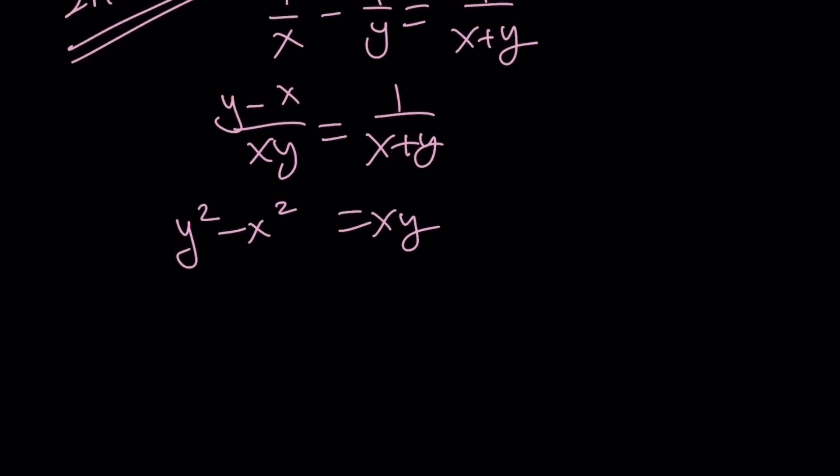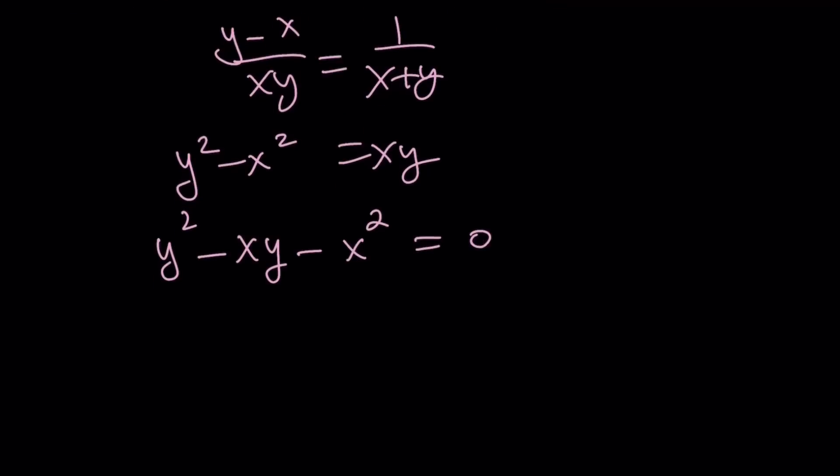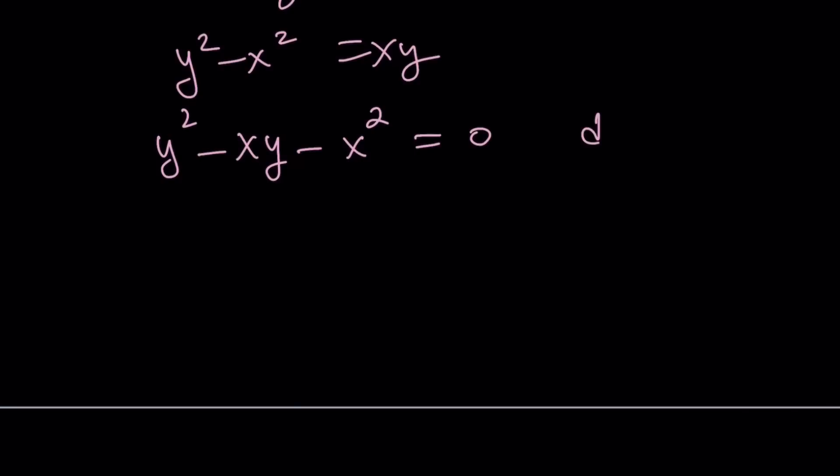Now for my second method I want to use quadratic formula. So I want to turn this into a quadratic equation in a single variable. How can I do that? I can go ahead and put everything on the same side first. Put the xy in the middle, set everything equal to 0. And then divide by x squared. Why? Because that's going to turn this into a quadratic equation. So like this: y squared over x squared minus xy over x squared minus x squared over x squared equals 0 over x squared which is 0.